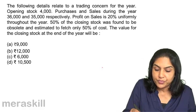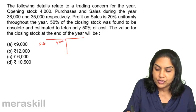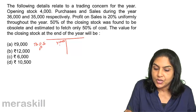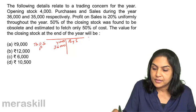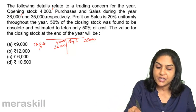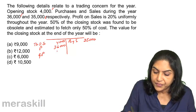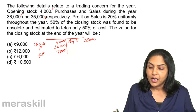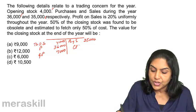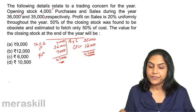We can do this in T-format or equation format. Opening stock 4,000, purchases 36,000, sales 35,000. Profit on sales is 20%, so profit is 20% of 35,000, which is 7,000. The total is 47,000, so the balancing figure — closing stock — is 12,000.